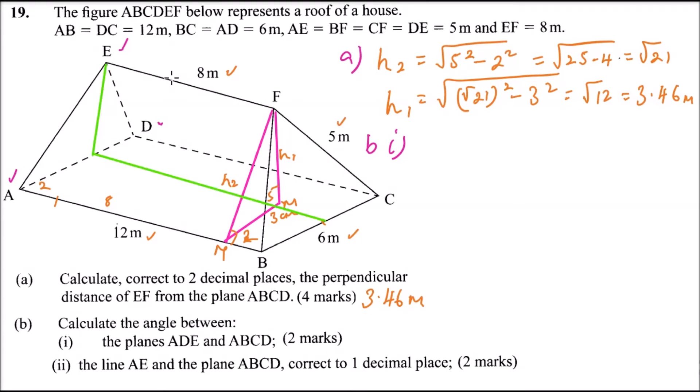Let's call the foot of the perpendicular K, so AEK is the projection. Calling the other point V, the angle we are interested in is angle EKV. To find that angle, I'll call this height H3.